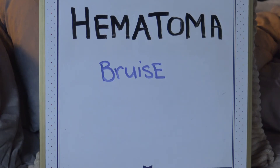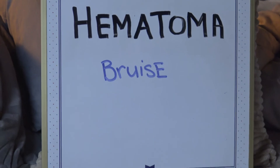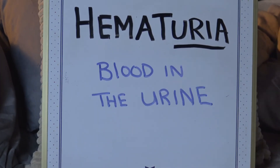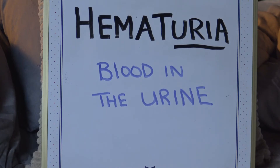Hematoma — a hematoma is a bruise, a bad bruise. Hematuria — hematuria is blood in the urine. Hema is blood, urea is urine, so blood will be present in the urine.